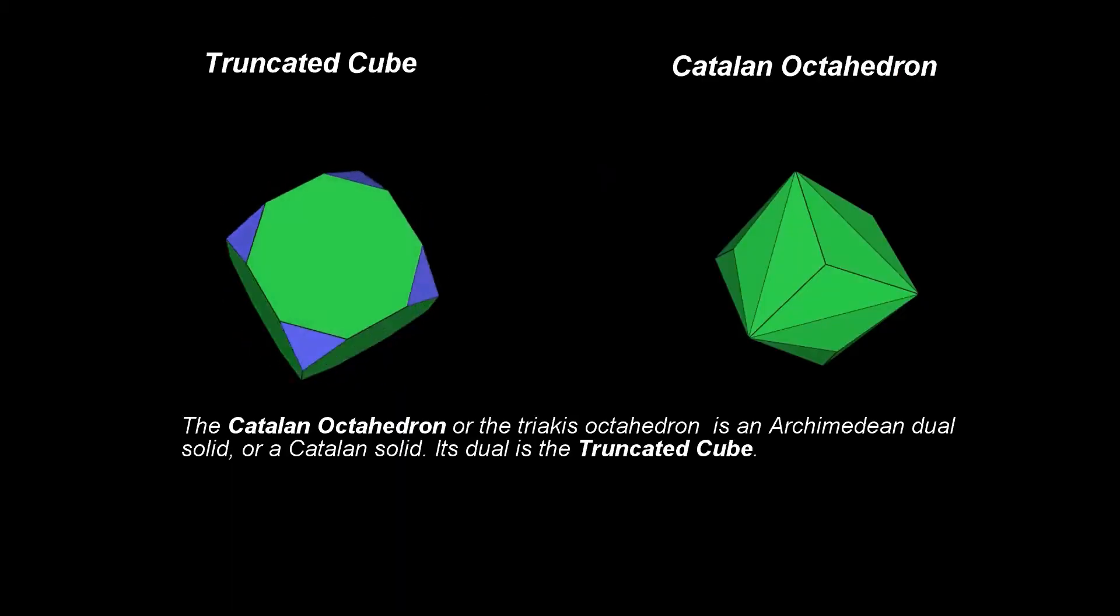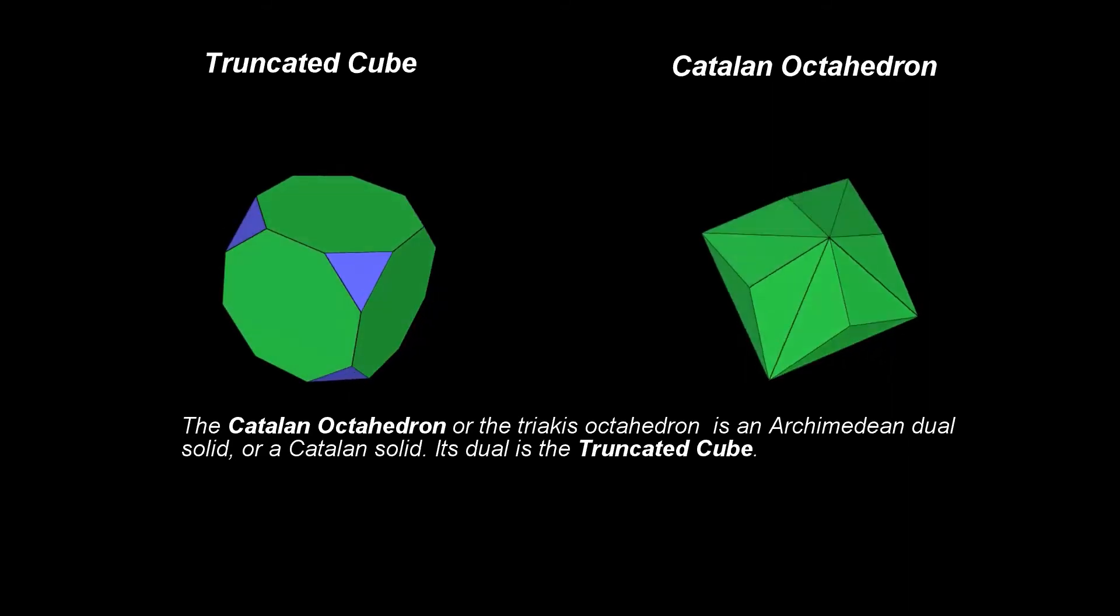we will use another approach to identify the truncated cube pattern in CPS. We will do that by looking first to the Catalan octahedron, the dual of the truncated cube.